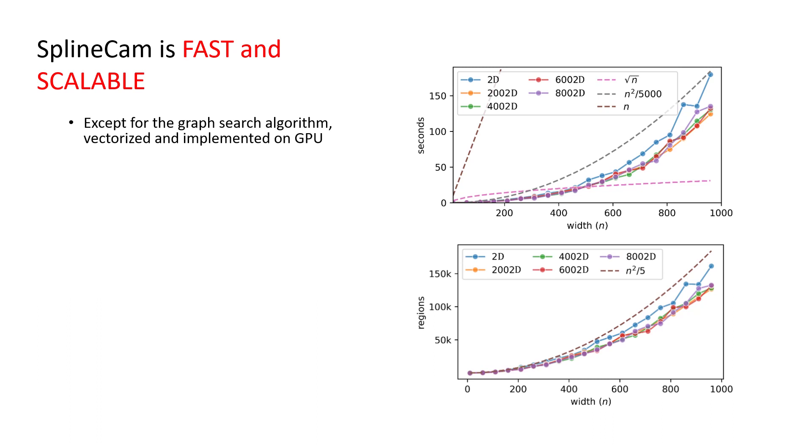SplineCam is fast and scalable. Except for the graph search algorithm, every operation in SplineCam is vectorized and implemented for GPU using PyTorch. We can benchmark the speed of SplineCam by running it on a single ReLU layer, and we present the plots to the right.